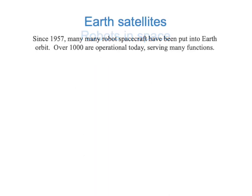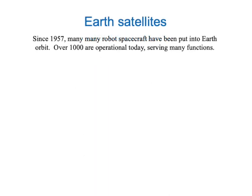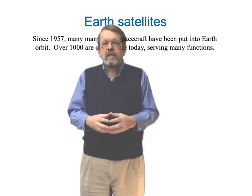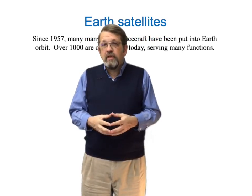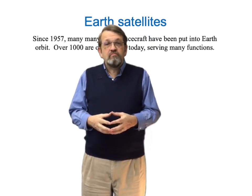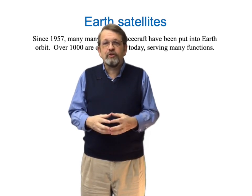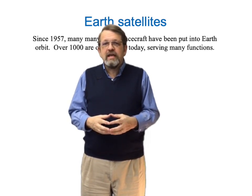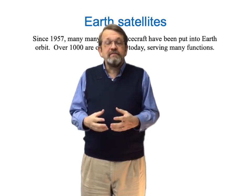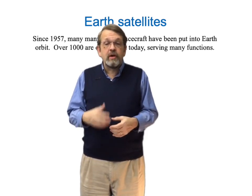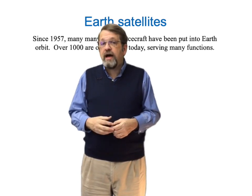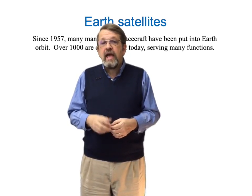And we'll talk about some spectacular examples along the way. Let's begin by talking about the robots in orbit around the Earth, the artificial Earth satellites. Since 1957, we've launched thousands of them. There are well over a thousand in operation today.